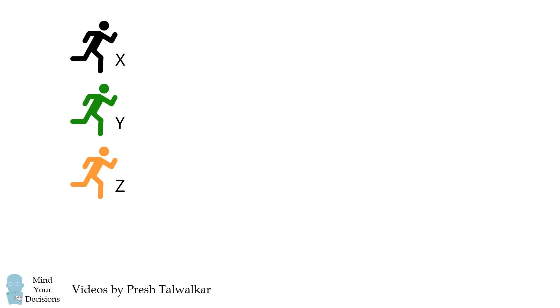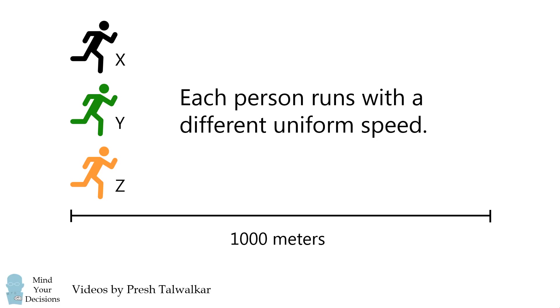Three runners X, Y, and Z compete in a 1000 meter race. Each runs with a different uniform speed.